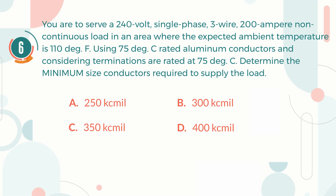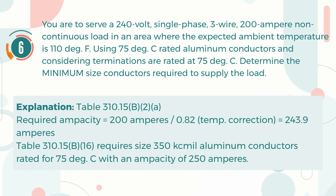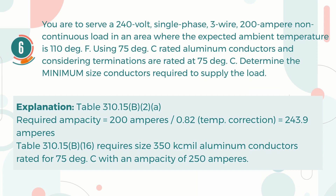The correct answer is C. 350,000 Circular Mil. Explanation: Table 310.15(B)(2)(a) indicates the temperature correction factor is 0.82. Therefore, the required ampacity equals 200 Amperes divided by 0.82, which equals 243.9 Amperes. Applying Table 310.15(B)(16), aluminum conductors 350 kcmil rated for 75 degrees Celsius have an ampacity of 250 Amperes.